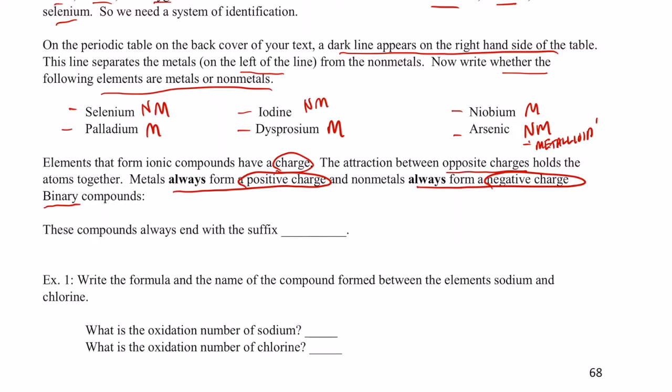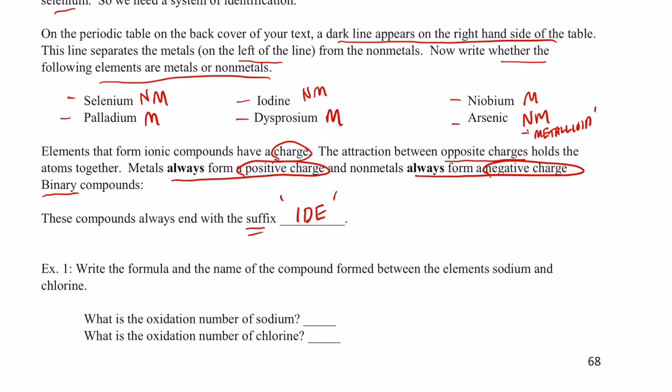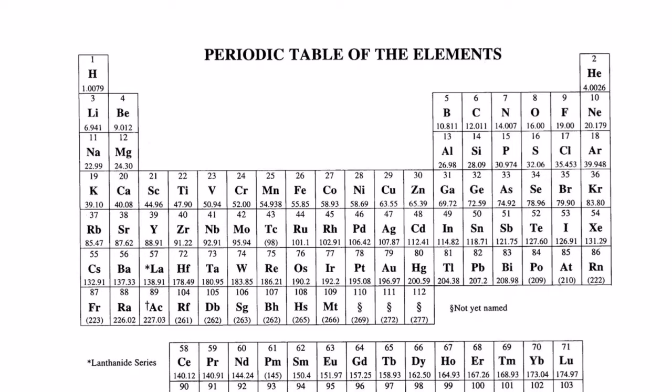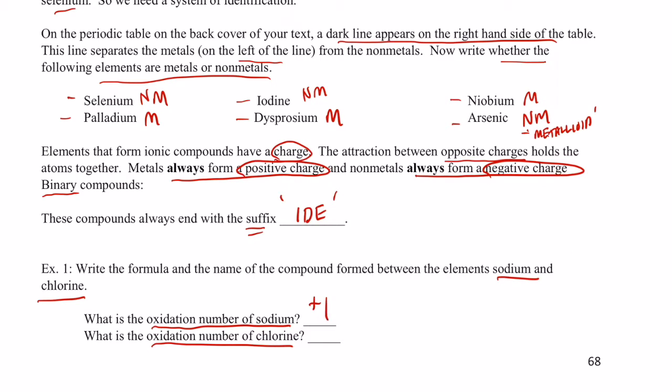Well, let's talk about binary compounds first. These will have two elements in it. These compounds always end with the suffix "-ide." So let's do some easy ones first. In fact, the most common of all. Sodium and chlorine. So let's find the oxidation number of sodium and the oxidation number of chlorine. So we have to go back to our periodic table for this. And sodium kiddos is right here. So remember, it has 11 electrons. And it wants to get 10 like neon. So it loses one. When it loses one, its charge is positive one.